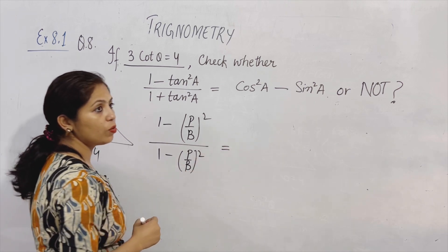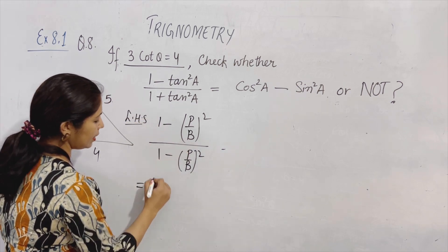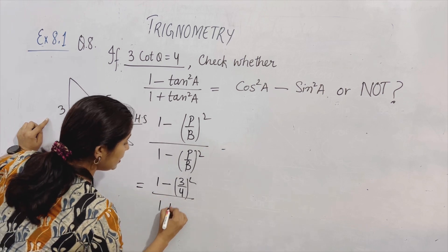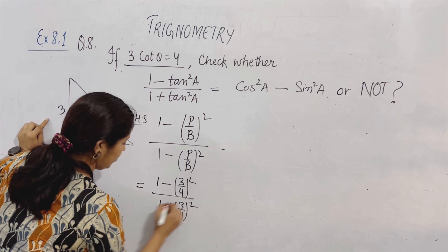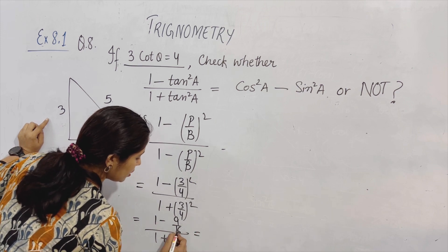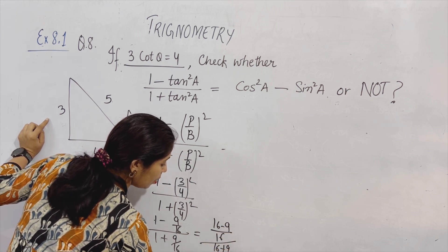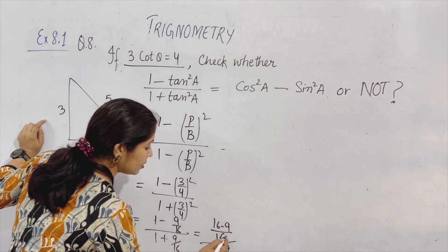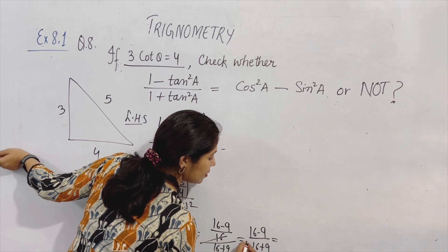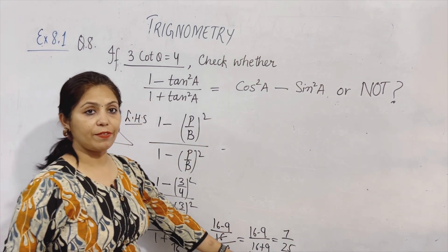यह equal किसके होना चाहिए? पहले एक एक करके कर लेते हैं — पहले left-hand side निकाल लेते हैं. Left-hand side की value देखें — 1 minus P upon B square. P की value है 3, B की value है 4. तो आ गई 1 minus 3 upon 4, whole square — that is 1 minus 9 upon 16. LCM लेंगे तो 16 बनेगा. 16 minus 9 upon 16, and नीचे 16 plus 9 upon 16. Denominators same हैं, तो cutting होगी. Answer आ गया: 16 minus 9 is 7, and 16 plus 9 is 25. So left-hand side answer is 7 upon 25.